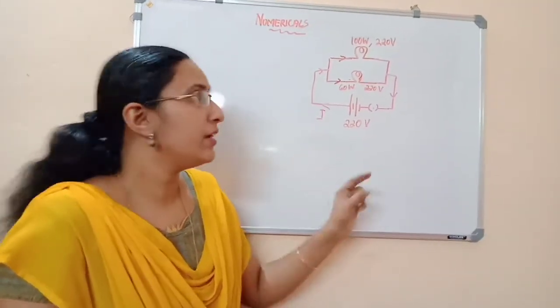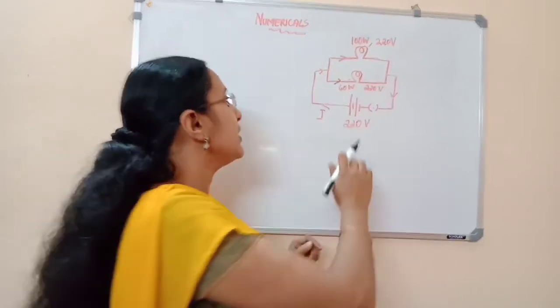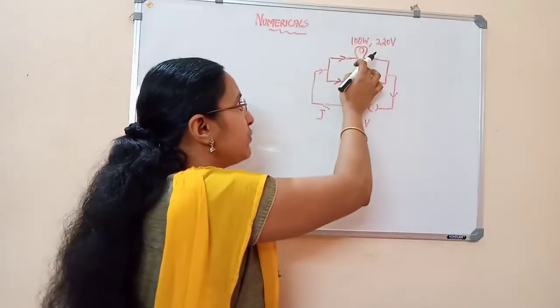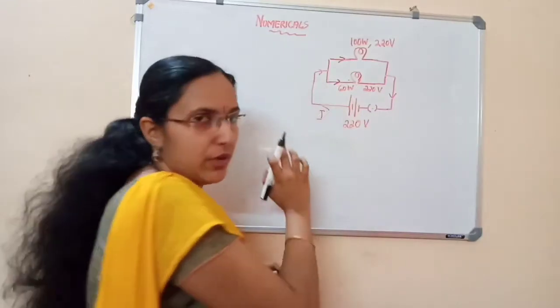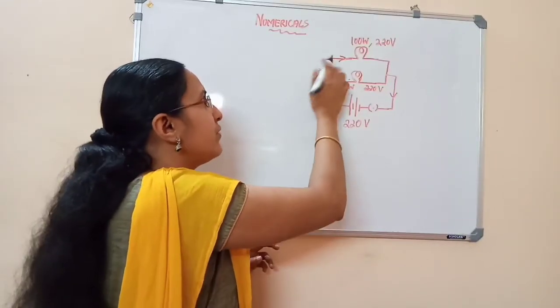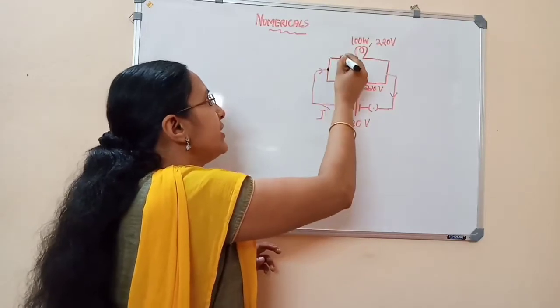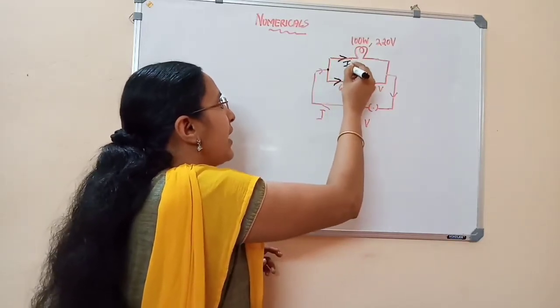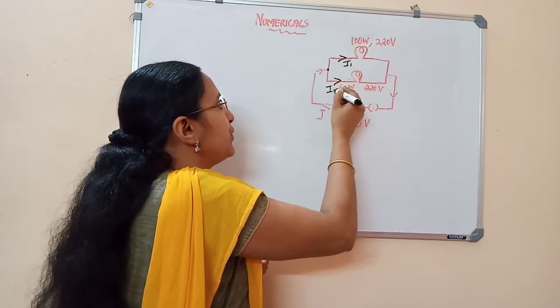The question is to find out the current passing through the 100 watt bulb and the 60 watt bulb. Here, current i is going through, and when it reaches here, it divides into two currents: i1 and i2.